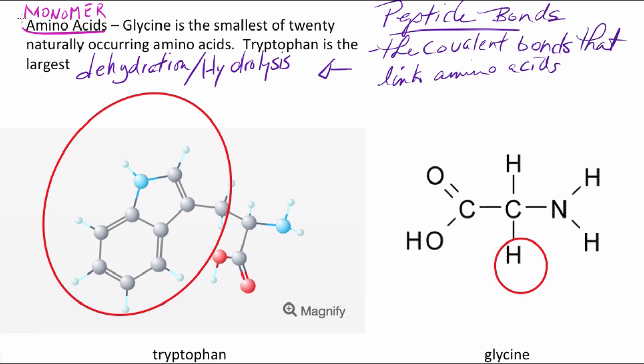Now, amino acids are the monomers, see up here in the left-hand corner, of proteins. The monomers, the amino acids, of which there are 20, are connected together by covalent bonds. In particular, we have a name for that type of covalent bond. It's called a peptide bond.